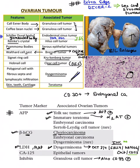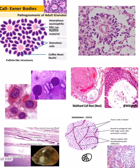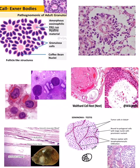For immunohistochemistry markers of dysgerminoma, we have OCT3/4, SALL4, NANOG, and c-KIT (also known as CD117). CA-125 is seen in epithelial tumors, and inhibin is seen in granulosa cell tumor, which is also positive for CD99. An extra point: DICER1 mutation is seen in sex cord stromal tumors.